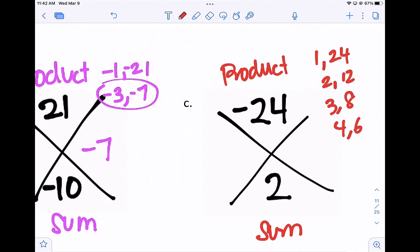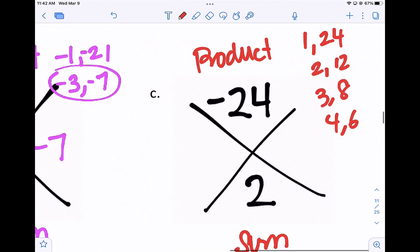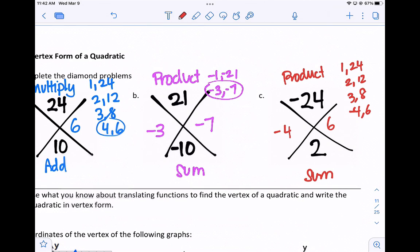And if it multiplies to a negative but adds to a positive, one of my numbers has to be negative. So out of all of these, which one can I make one of the numbers negative so it adds to a positive 2 but multiplies to a negative 24? And that would be negative 4 and positive 6. So that would be the solution of the last diamond problem.